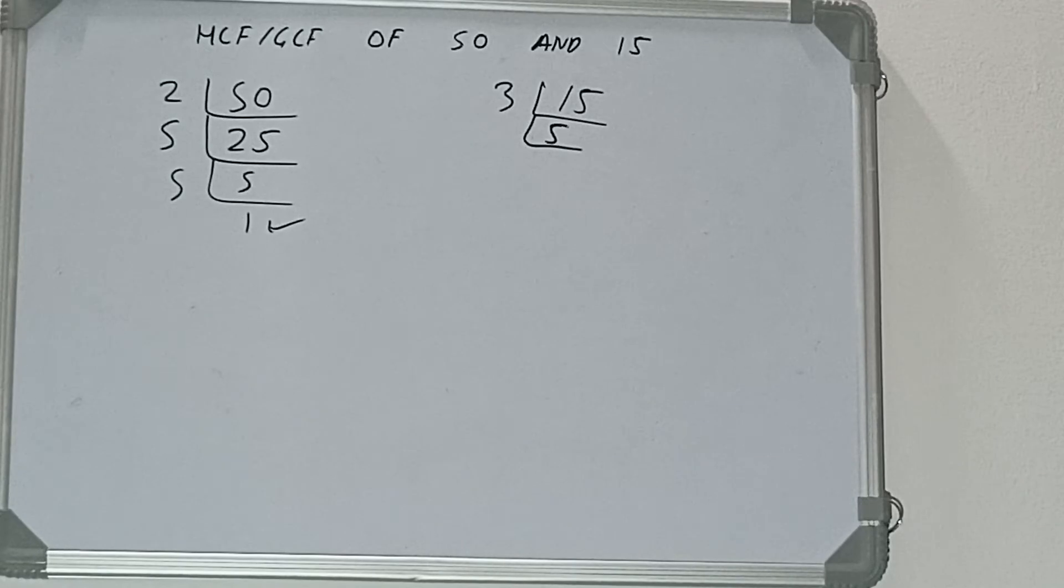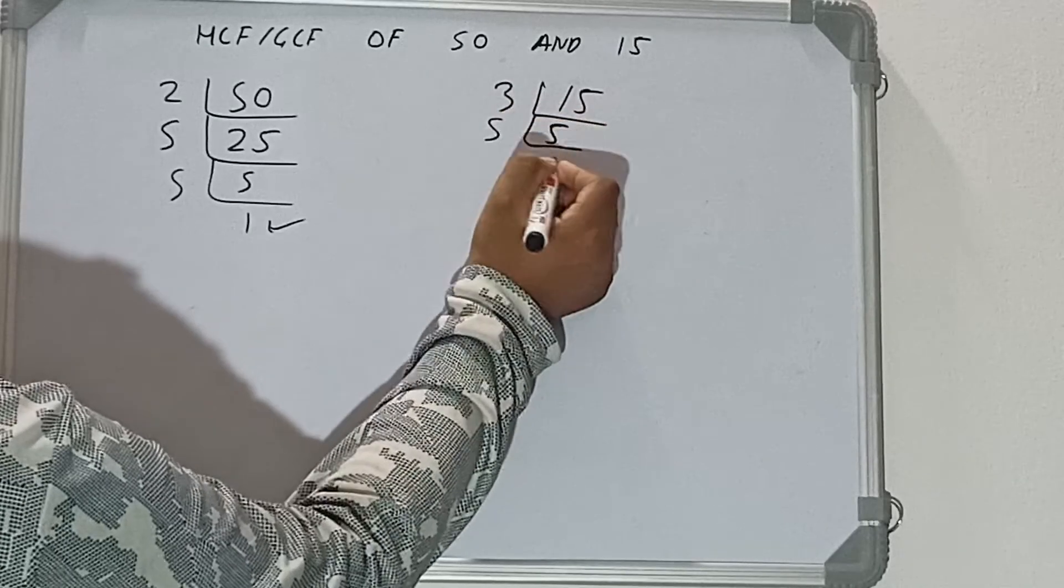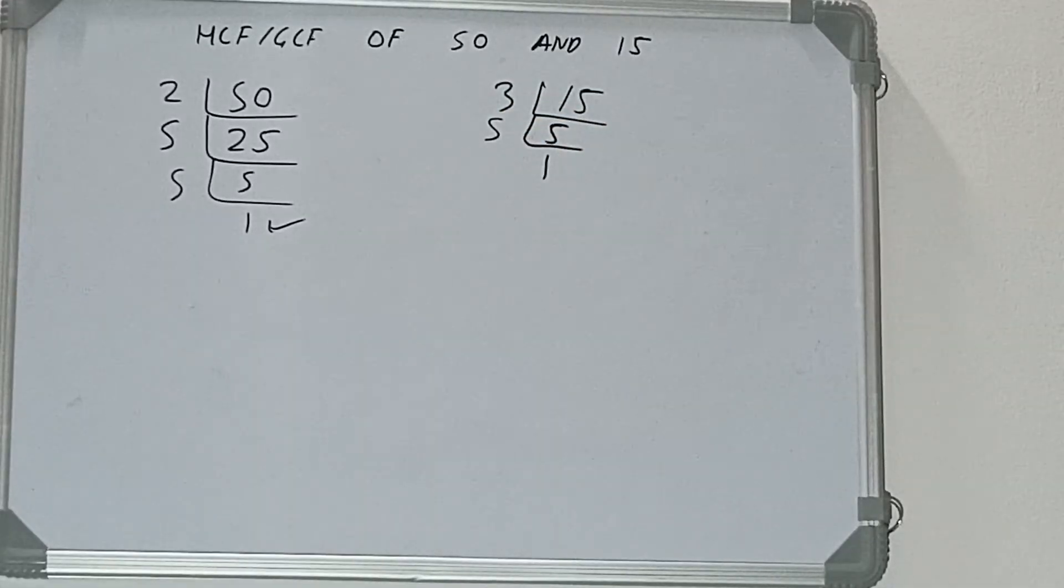5 is itself a prime number, so it is only divisible by itself. When we divide 5 by 5, we'll have 1. Once we get 1, we are done with this. In the next step, we need to write each of the numbers with their respective prime factors.